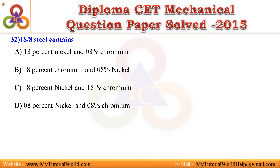Question 32. 18/8 steel contains: a. 18% nickel and 8% chromium. b. 18% chromium and 8% nickel. c. 18% nickel and 18% chromium. d. 8% nickel and 8% chromium. Answer is: b. 18% chromium and 8% nickel.